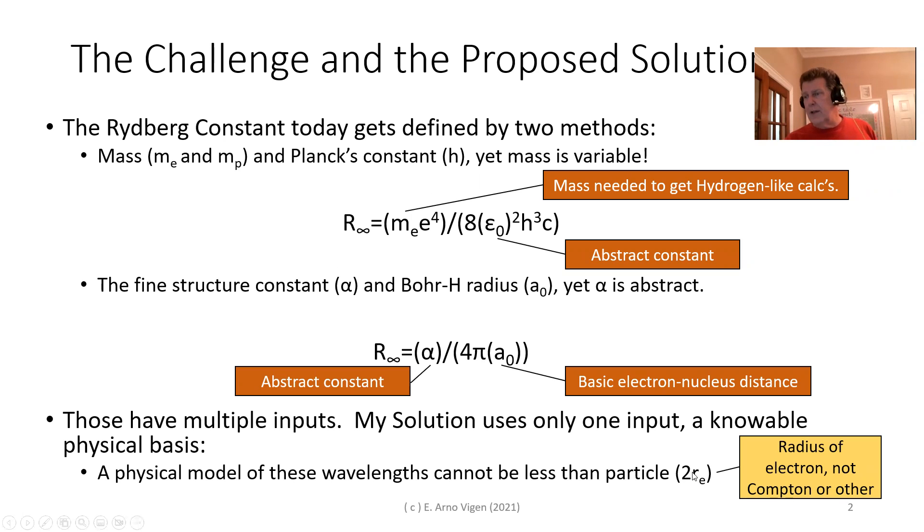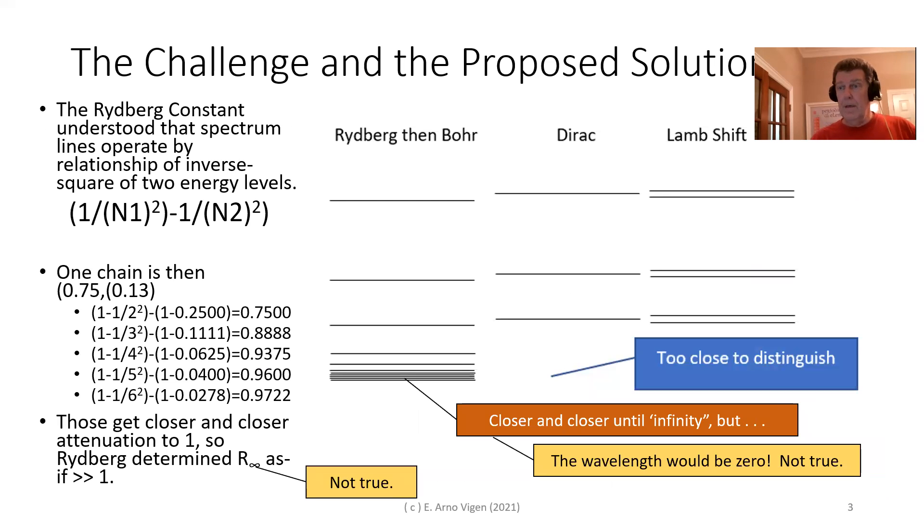That's about 2.81 times 10 to the minus 16 meters. It is the radius of electron, and it is a physical radius. It's not the Compton radius and some others. If you go in your textbook, there's like 6 radiuses. I have chosen one that I believe fits the physical one.